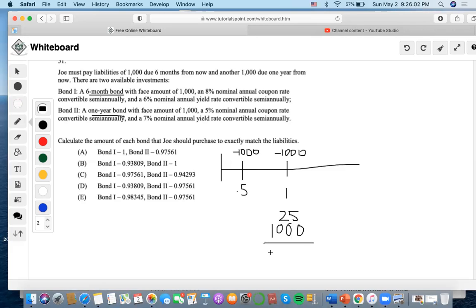In total, this bond would be worth $1,025. Now we're dealing with a liability of $1,000 in one year. The question asks how much of each bond Joe should purchase to exactly match the liabilities.